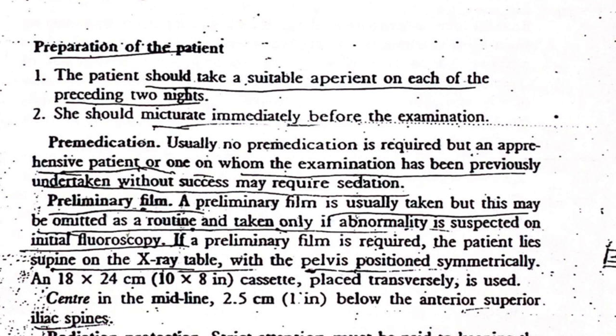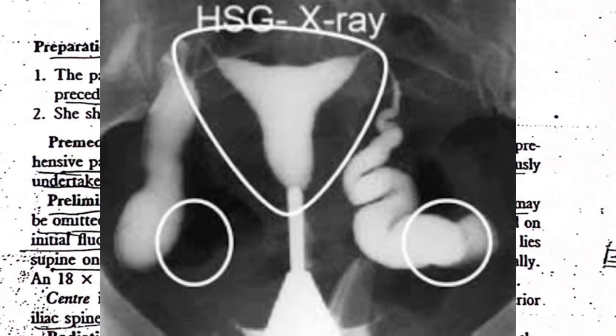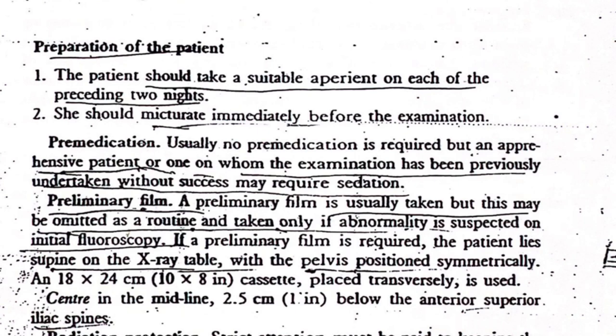If a preliminary film is required, the patient lies supine with the pelvis positioned symmetrically, and an 18 × 24 cm (or 10 × 8 inch) cassette should be placed transversely.